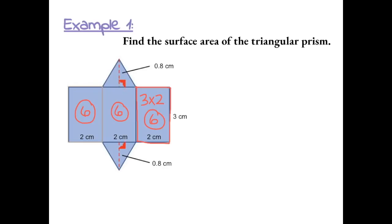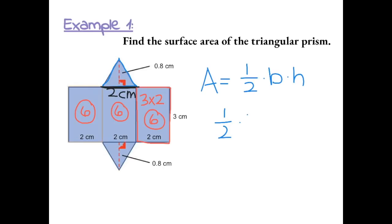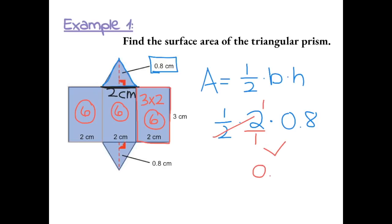Now we need to find the areas of each triangle. We can start with the top triangle. To find the area of a triangle, we use the formula one-half times the base times the height. For the triangle on top, we do one-half times the base, which is 2 centimeters, times the height, which is 0.8. One-half times 2 is 1, and 1 times 0.8 is 0.8. So the area of this triangle is 0.8. Because the other triangle has the same dimensions, its area is also 0.8.